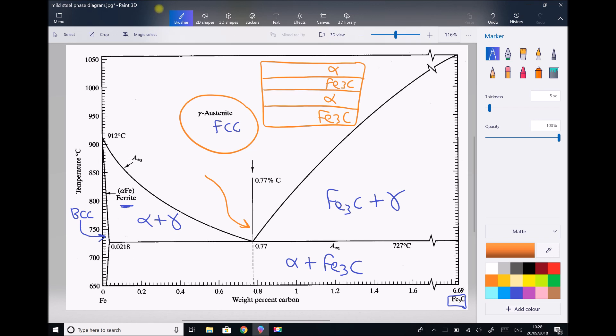The important things to point out are that the percentage of carbon is 0.77% and the transformation is occurring at 727 degrees Celsius. The lowest temperature the FCC will go to BCC or BCC will go to FCC is 727 degrees. Let's pick another point.